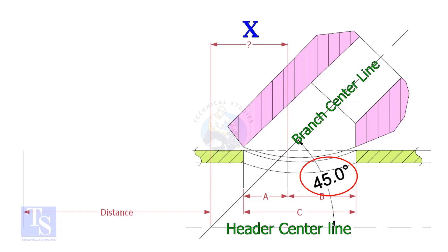If the including angle is 45 degree, the value of X will be always half OD of the header. Suppose the OD of the header is 400mm, then the value of X will be 200mm.